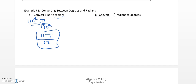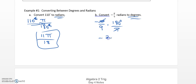Now converting from radians to degrees: I have negative pi over 9. Going to degrees means 180 has to be on top — so I multiply by 180 degrees over pi. The pi and pi cancel, leaving degrees. 180 divided by 9 is 20, so that's negative 20 degrees. When converting, if your answer started positive it ends positive; if it started negative it ends negative.